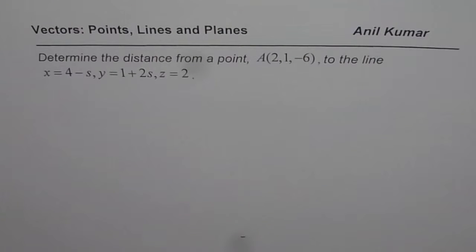The question is: determine the distance from a point A(2,1,-6) to the line x = 4 - s, y = 1 + 2s, z = 2. So that is the question for you.